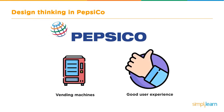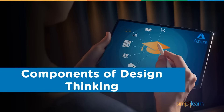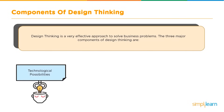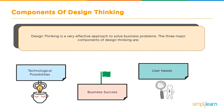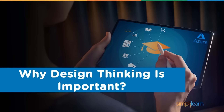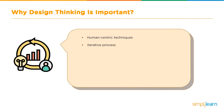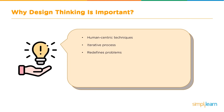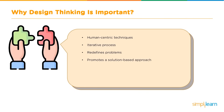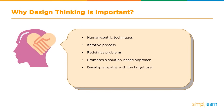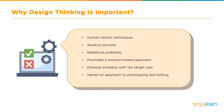Getting an idea of what clients require — such as from vending machines — and delivering good user experience helped PepsiCo stay on top of the market. Design thinking is a very effective approach to solving business problems. The three major components of design thinking are technological possibilities, business success, and user needs. Design thinking is important because it solves problems using human-centric techniques, is iterative, understands user challenges, promotes a solution-based approach, develops empathy with the target user, and encourages hands-on prototyping and testing.